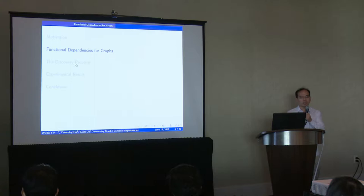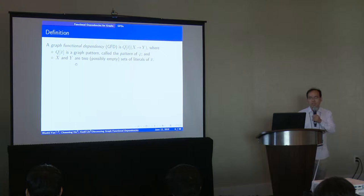Similar inconsistencies can also be found in other knowledge graphs. And how can we catch such inconsistencies? We will adopt the graph functional dependencies.